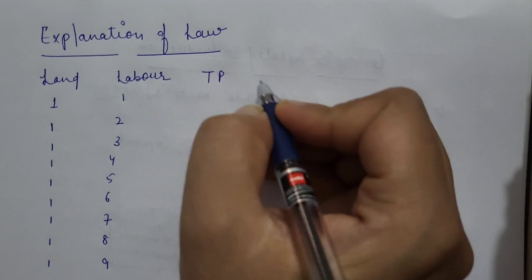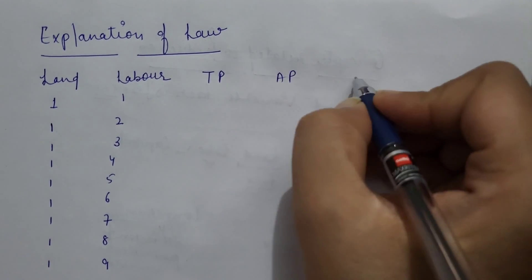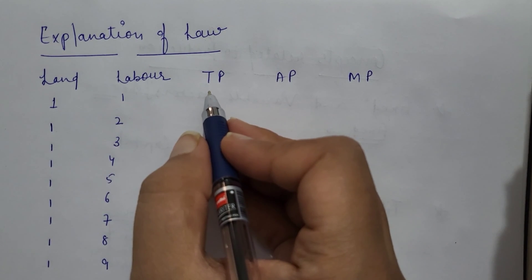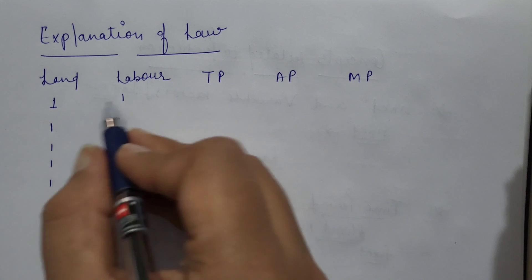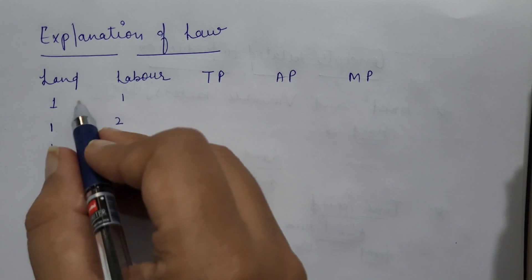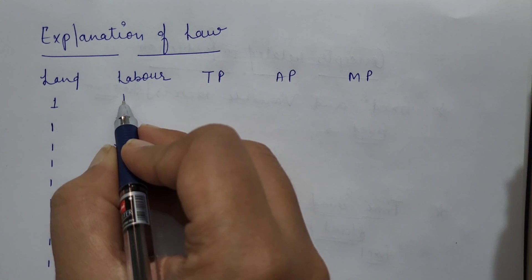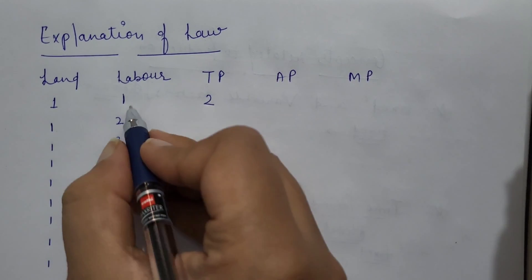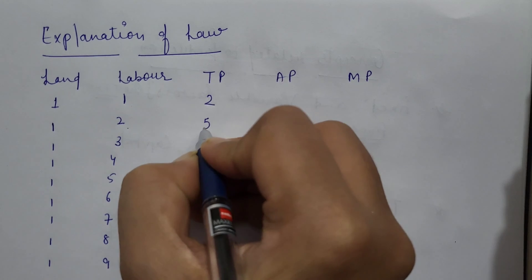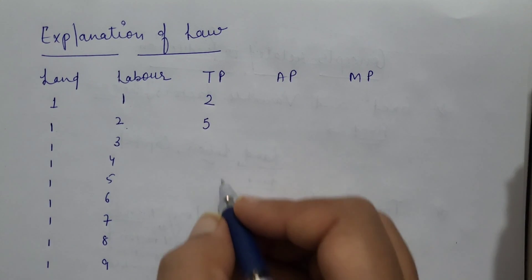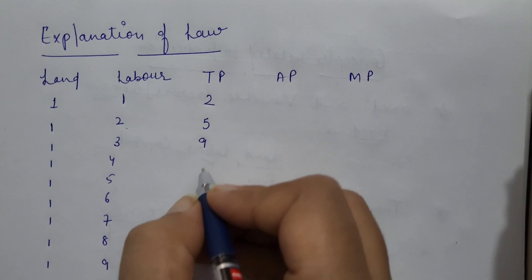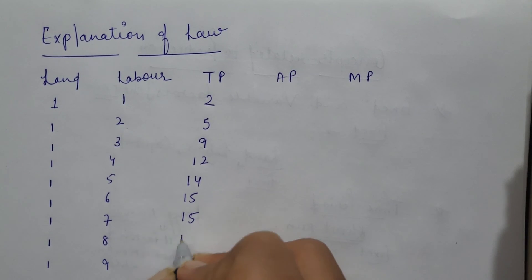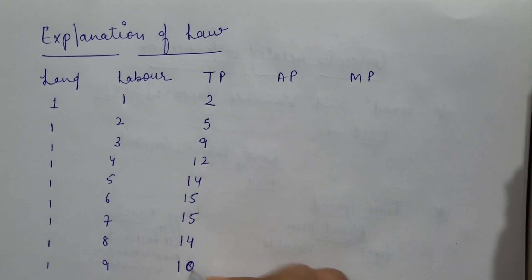We will study the concept of total product, average product, as well as marginal product. The total product — suppose by combining land and labor in a one-to-one proportion on one hectare of land with one laborer, the output was 2. As we increased laborers, output is 5, then 9, then 12, 14, 15, 15, 14, and 10.